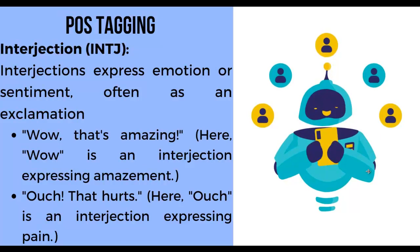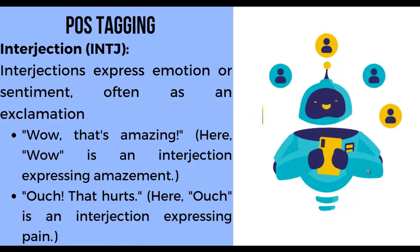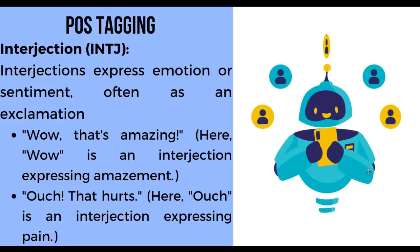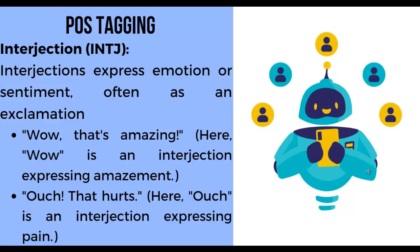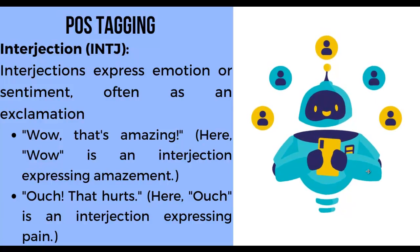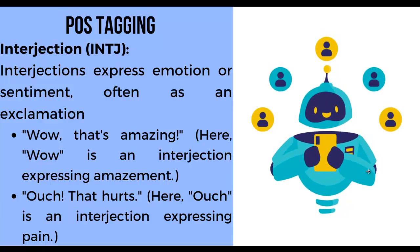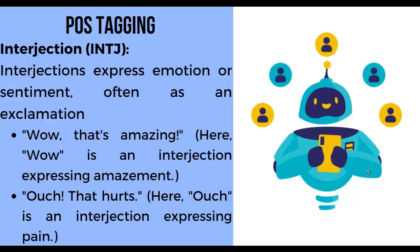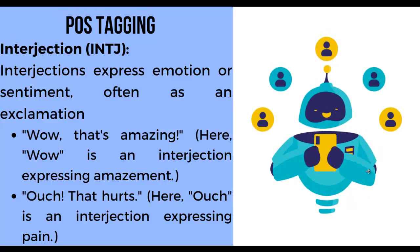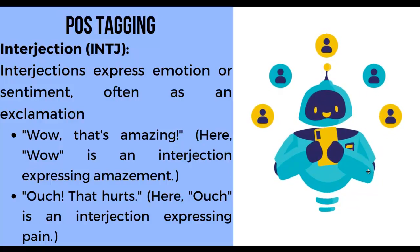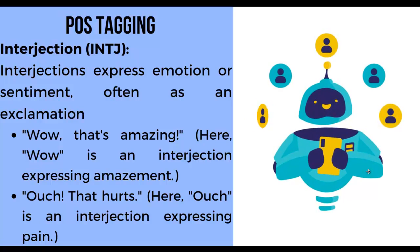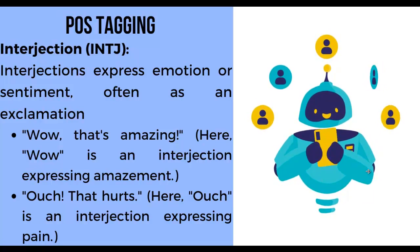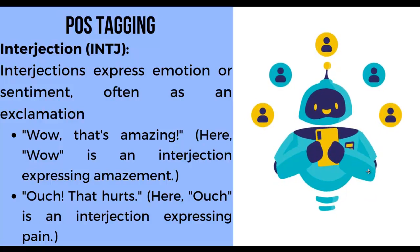Next, interjection. Interjections express emotion or sentiment, often as an exclamation. First example: 'Wow, that's amazing' — here, 'wow' is an interjection expressing amazement. Second example: 'Ouch, that hurts' — here, 'ouch' is an interjection expressing pain.